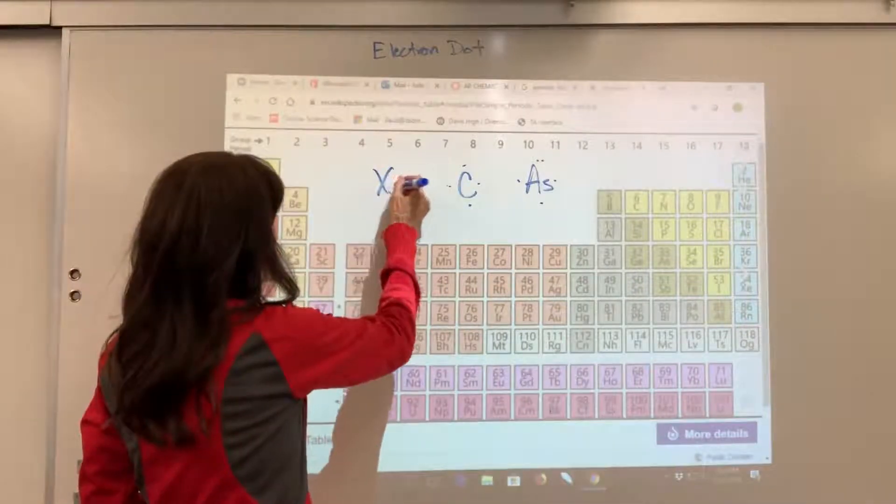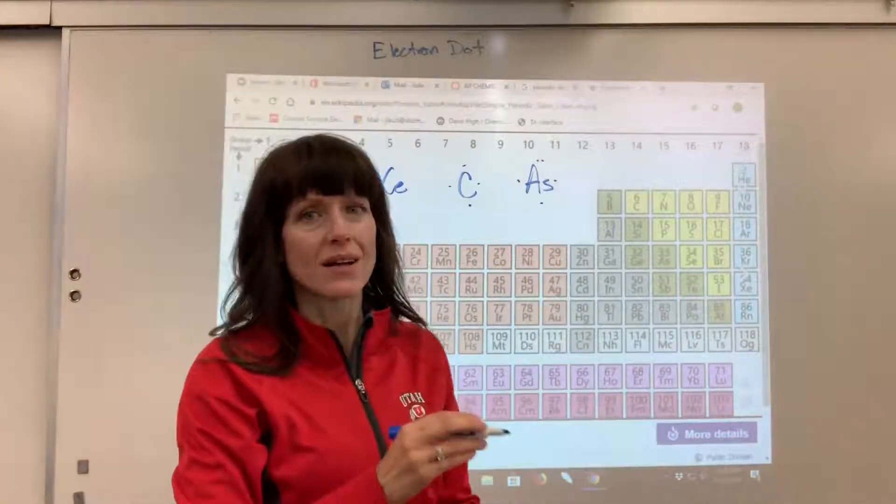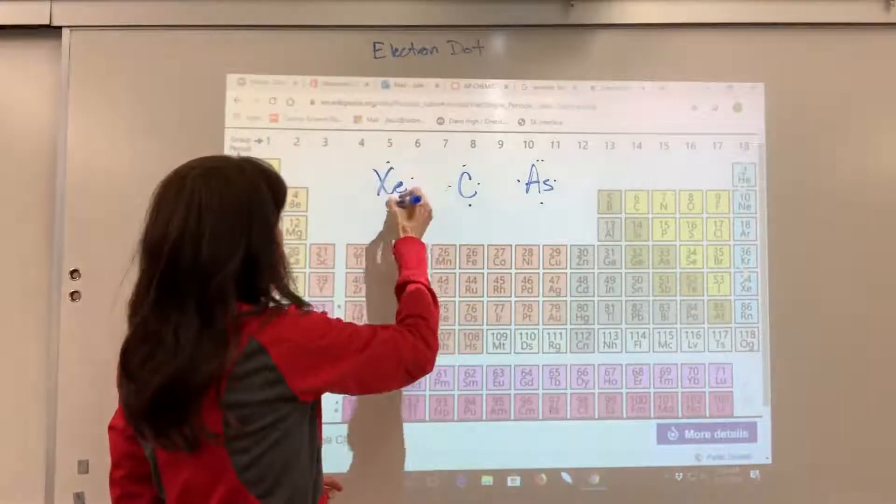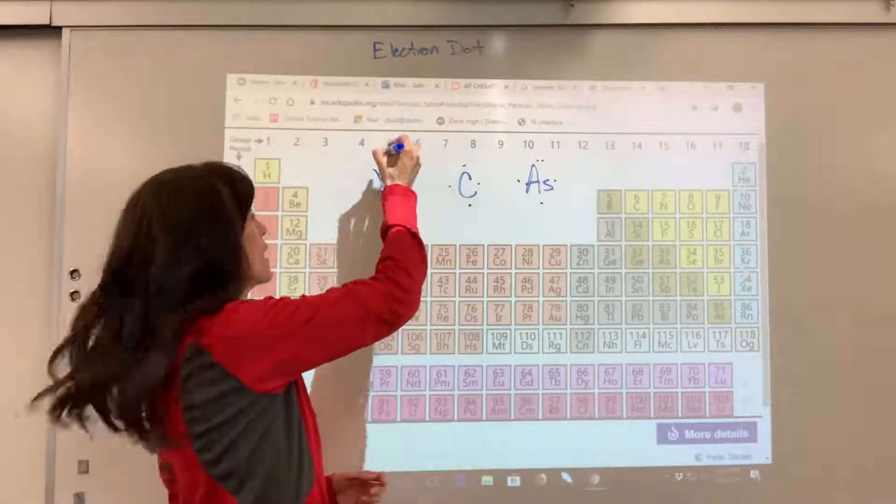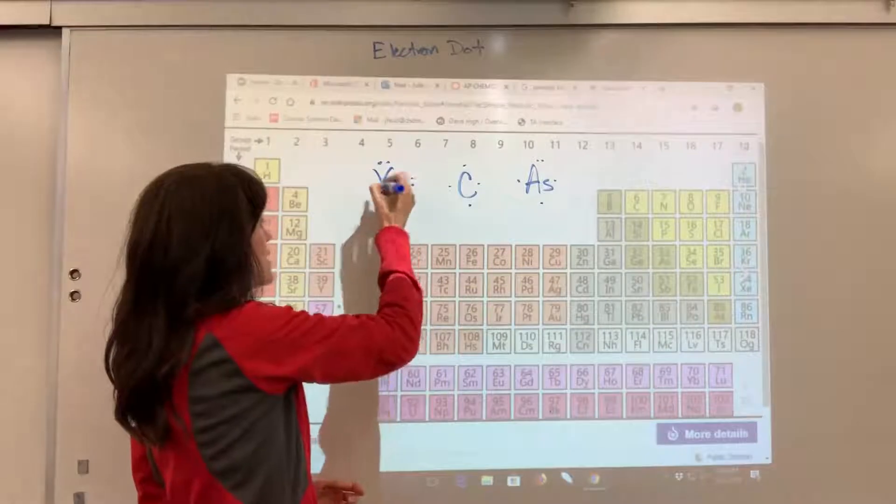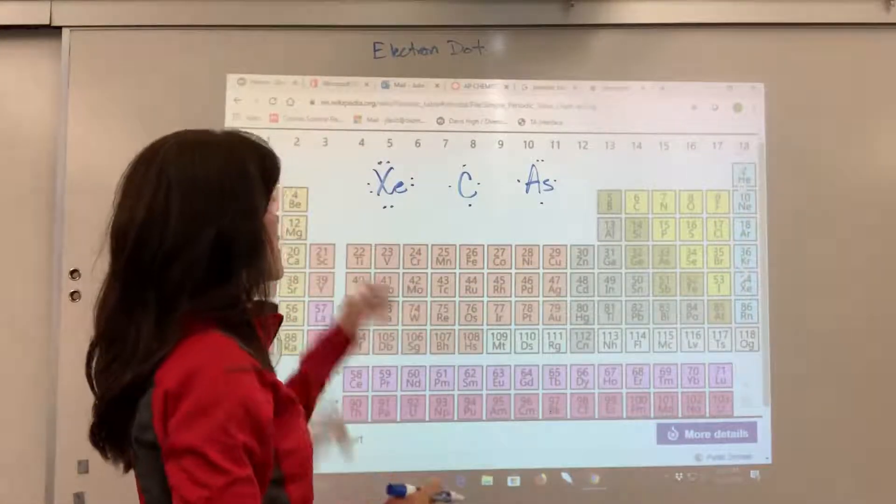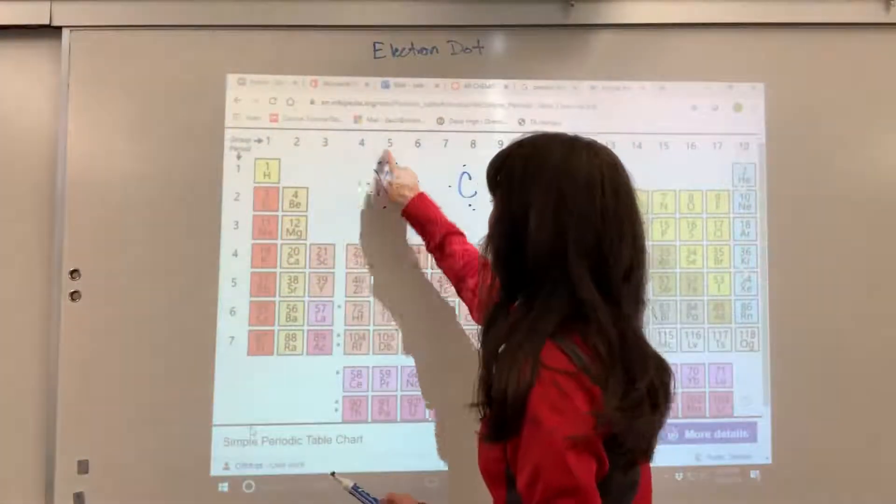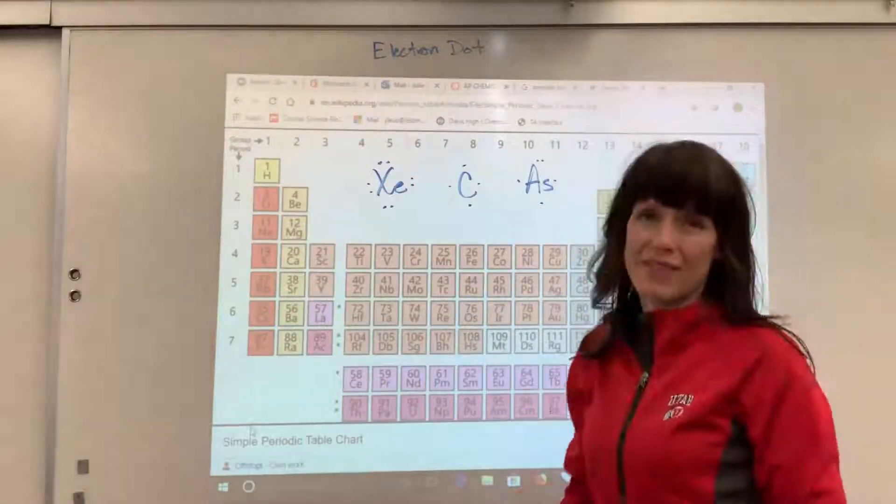So I'm going to do xenon and start at the top, put one electron on each side, then we double up. So one, two, three, four. Now you can double up five, six, seven, eight. Okay. This has all paired electrons. We have four pairs of electrons around that xenon.